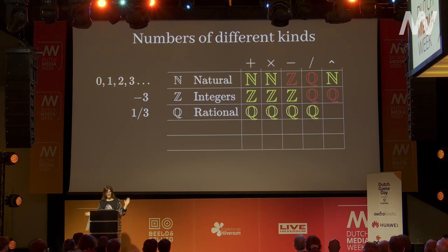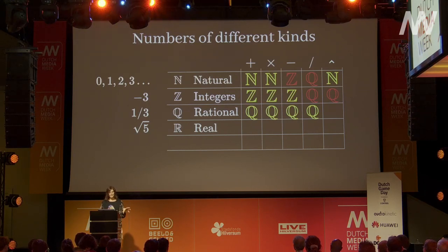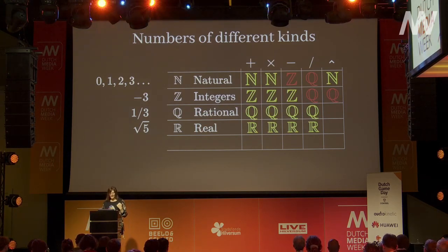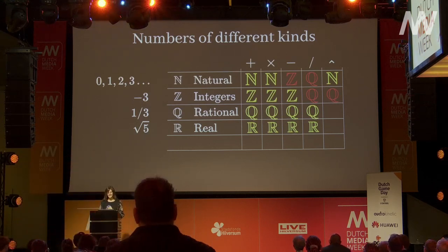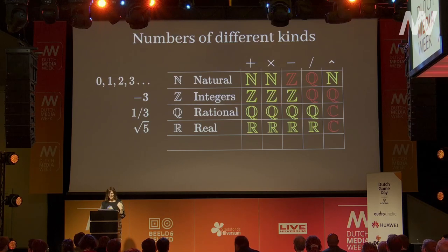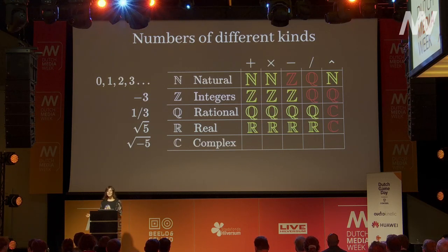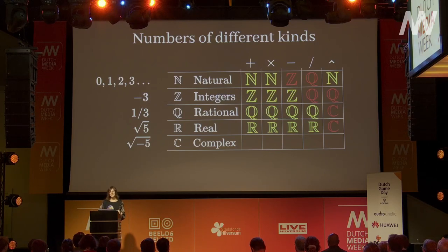Rational numbers are closed under addition, multiplication, subtraction, and division. But exponentiation gets more complicated — raising to the power of 0.5 means taking a square root, and the square root of 5 can't be expressed as an integer divided by an integer. So we need the real numbers. Real numbers are closed under all four operations. But then if we want exponentiation like the square root of a negative number, we enter complex numbers.